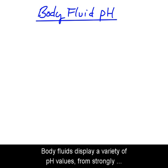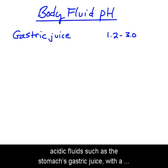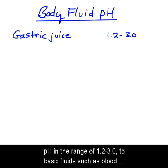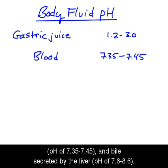Body fluids display a variety of pH values, from strongly acidic fluids such as the stomach's gastric juice with a pH in the range of 1.2 to 3.0, to basic fluids such as blood with a pH of 7.35 to 7.45, and bile secreted by the liver with a pH of 7.6 to 8.6.